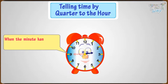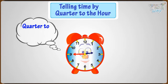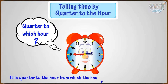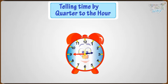When the minute hand moves round to 9, it is quarter to the hour — but quarter to which hour? It is quarter to the hour from which the hour hand is just a quarter away. Let's learn more with an example.